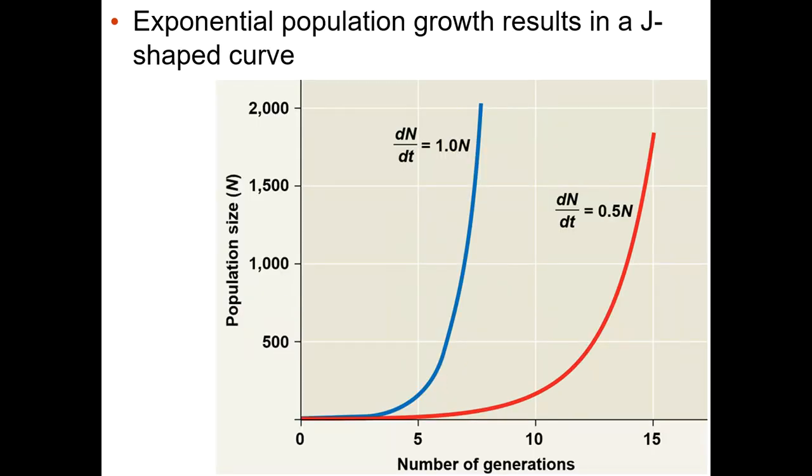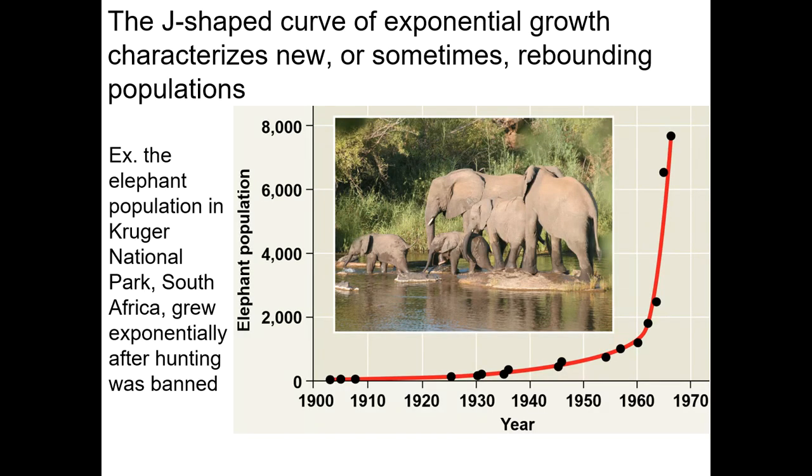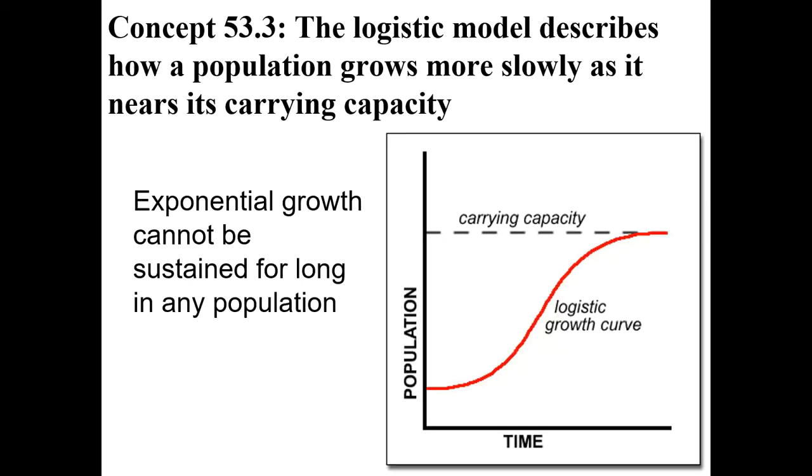And this just shows you that you're looking at a J-shaped curve. This is an example, a real life example of a population. This is a population of elephants. They would actually have a fairly slow R_max, a fairly low R_max, because their gestation time is really long. They only produce one baby at a time. And mom's pregnant for a long, long time. But even they can show an exponential rate of growth. And so this is Kruger National Park in South Africa. And I don't know when hunting was banned, but probably on some point in here. And here's the J-shaped curve that occurred as the population rebounded.